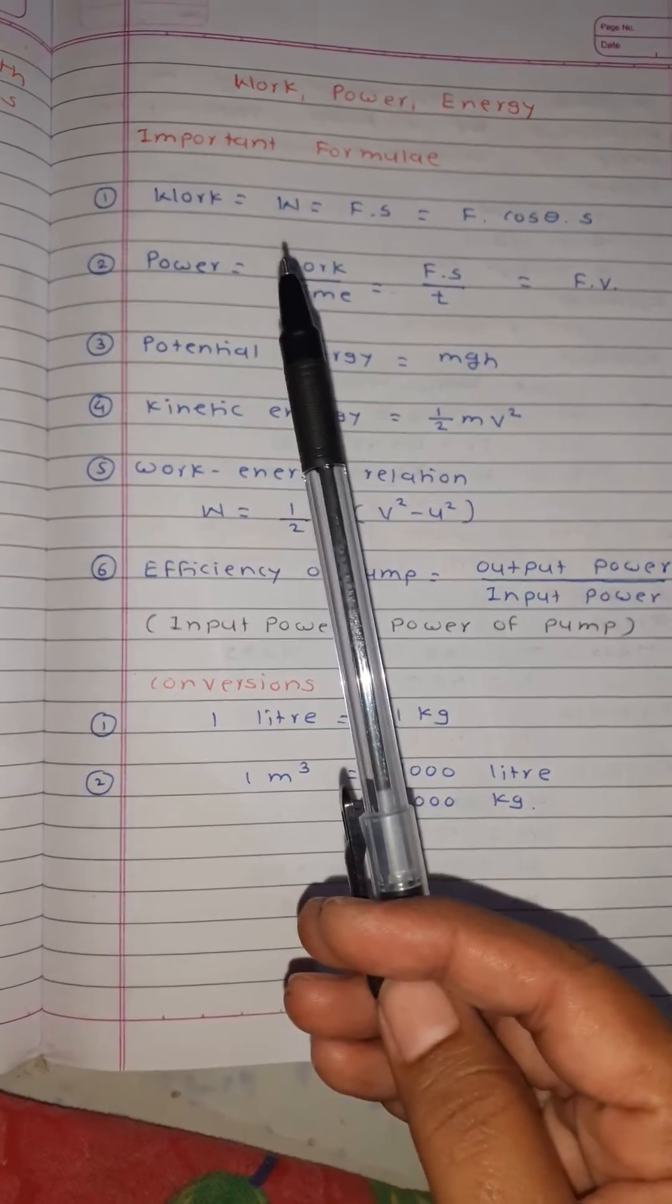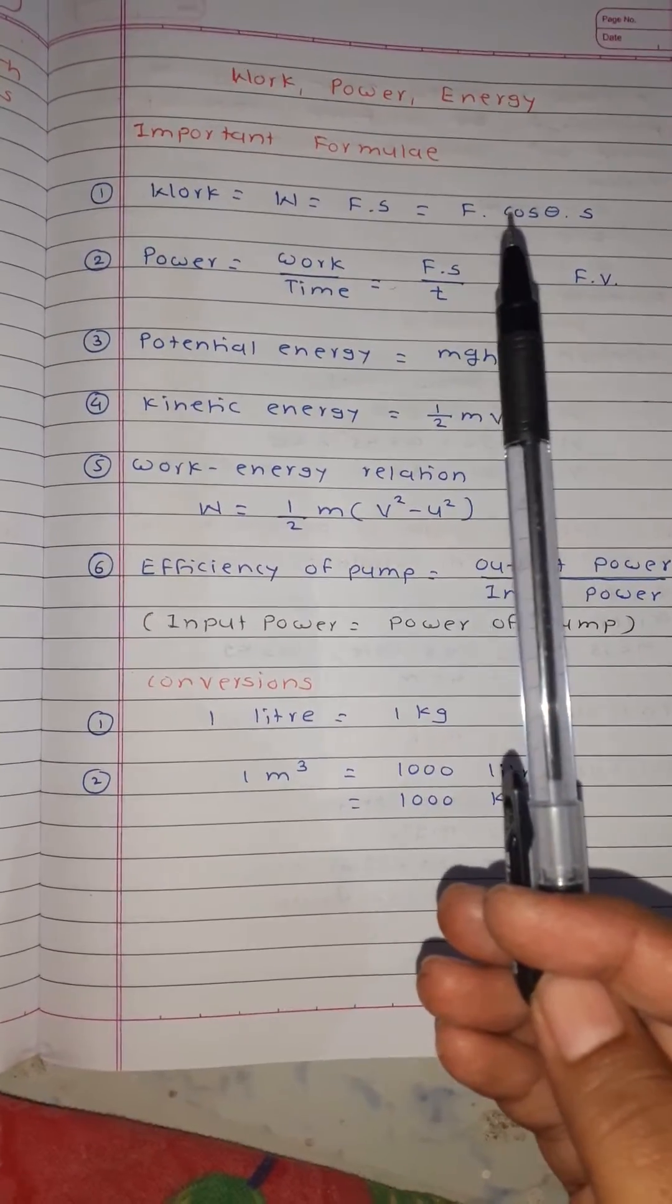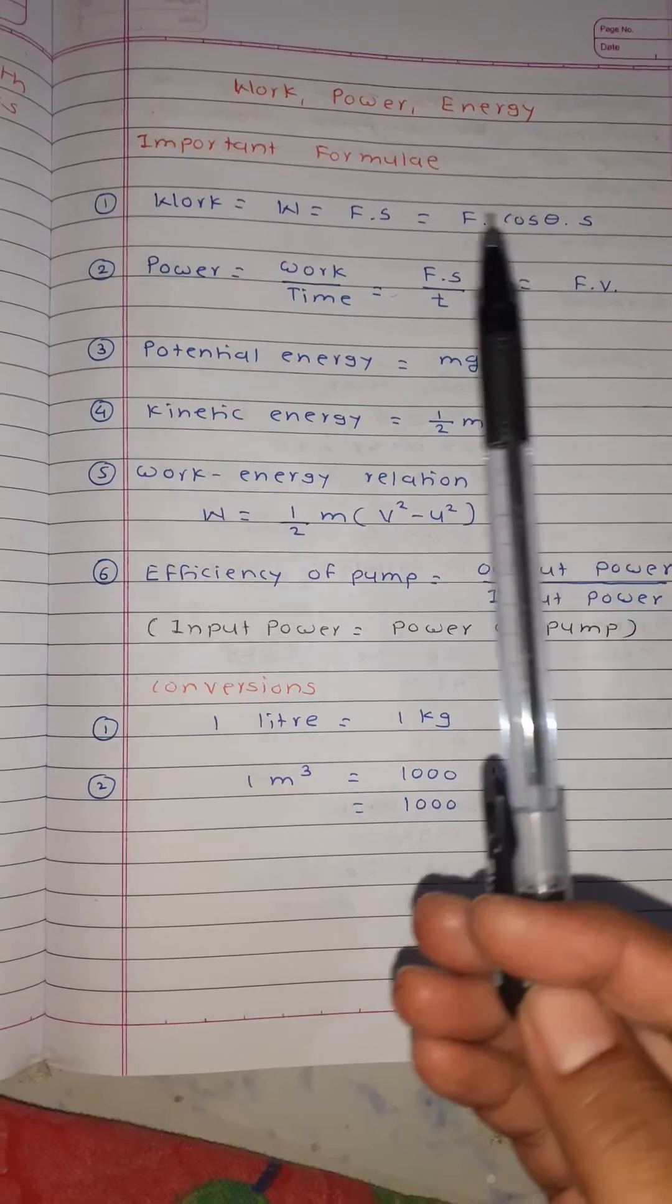First, work: W = F × S where F is force, S is displacement. Sometimes that is F × cos θ × S where θ is the angle of inclination.